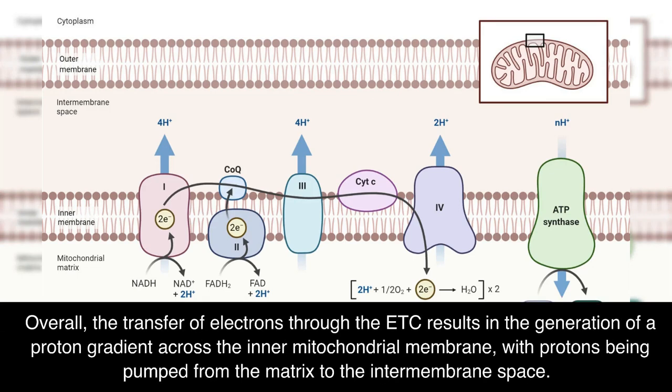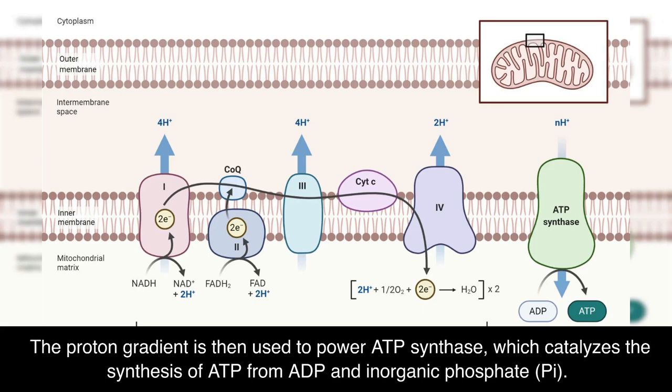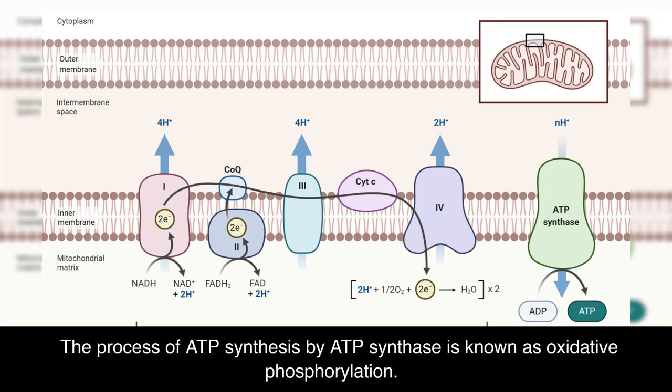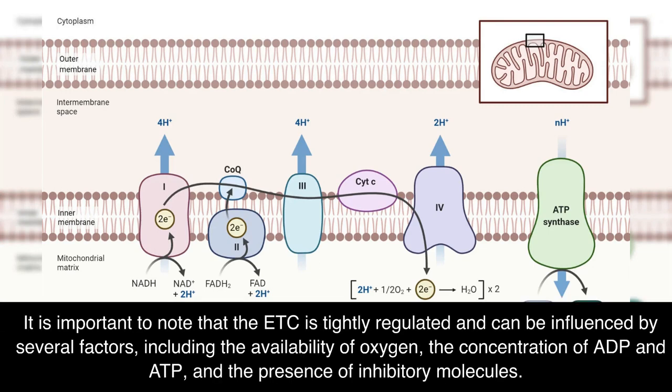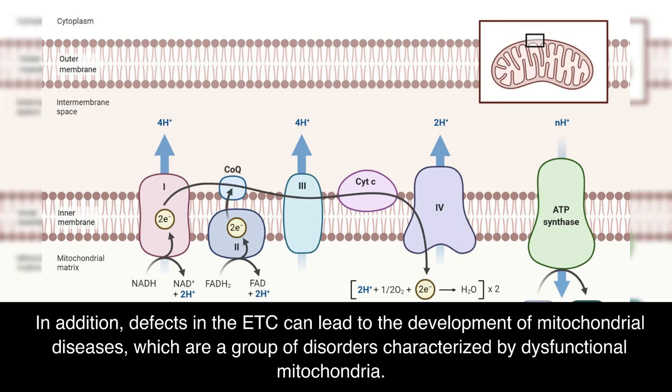Overall, the transfer of electrons through the ETC results in the generation of a proton gradient across the inner mitochondrial membrane, with protons being pumped from the matrix to the intermembrane space. The proton gradient is then used to power ATP synthase, which catalyzes the synthesis of ATP from ADP and inorganic phosphate. The process of ATP synthesis by ATP synthase is known as oxidative phosphorylation. It is important to note that the ETC is tightly regulated and can be influenced by several factors, including the availability of oxygen, the concentration of ADP and ATP, and the presence of inhibitory molecules. Defects in the ETC can lead to the development of mitochondrial diseases, which are characterized by dysfunctional mitochondria.